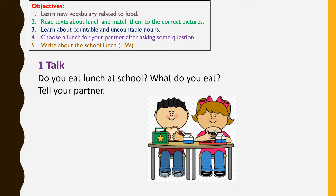Let's start with activity 1. Every girl in the class is going to choose a partner and ask these two questions: Do you eat lunch at school? What do you eat? For example, if I choose my partner Alia: Alia, do you eat lunch at school? Yes, I have my lunch at school. What do you eat? I usually eat a cheese sandwich with tomatoes and some milk.